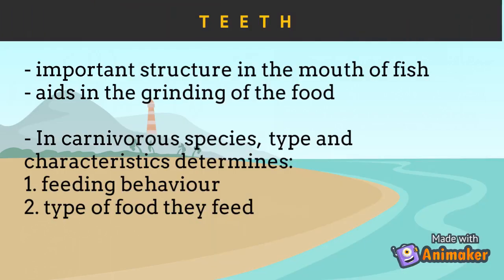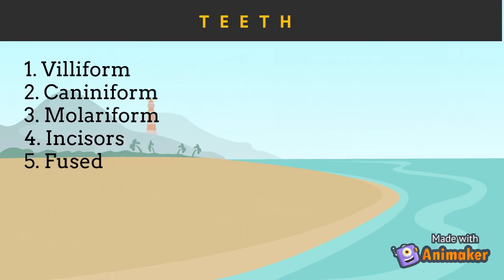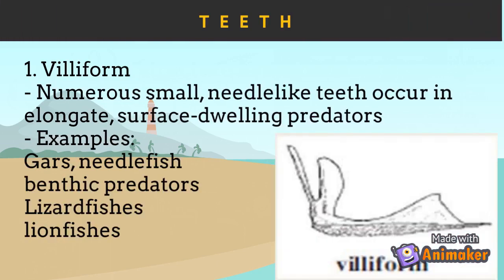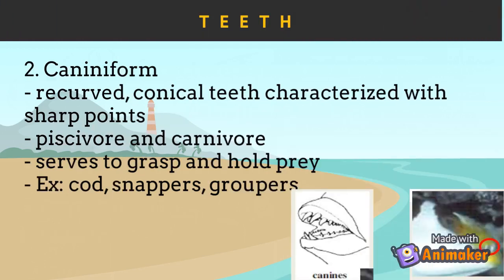Teeth are an important structure in the mouth of fish and aid in the grinding of food. In carnivorous species, the type and characteristics of teeth determine the feeding behavior and type of food consumed. There are five types of teeth in fish: villiform, caniniform, molariform, incisors, and fused teeth. Villiform teeth are numerous, small, needle-like teeth found in elongate, surface-dwelling predators such as gars, needlefish, and benthic predators like lizardfishes and lionfishes. Caniniform teeth are recurved, conical teeth with sharp points — the teeth of piscivores and carnivores — that serve to grasp and hold prey, reaching an extreme form in almost triangular, fang-like, slightly flattened teeth.